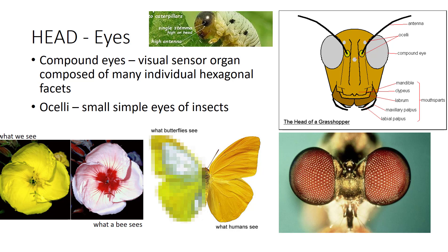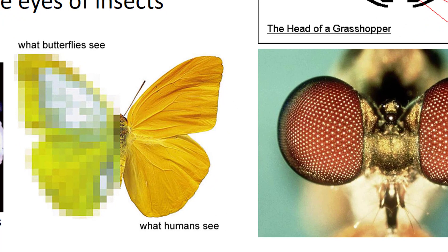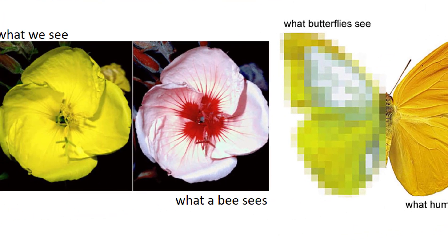Insects have compound eyes and/or ocelli. Compound eyes are often larger and consist of thousands of hexagonal ommatidia, which are tiny, independent photoreception units that distinguish brightness and color. The image perceived by the arthropod is the combination of inputs from the numerous ommatidia, which are oriented to point in slightly different directions. Compared to simple aperture eyes like ours, compound eyes have poor resolution. However, they possess a very large view angle and the ability to detect fast movement and, in some cases, the polarization of light. Bees see ultraviolet light, so although invisible to us, it uncovers colors and patterns which draw them to the source of pollen and nectar.